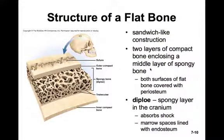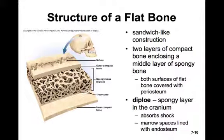Flat bones have a distinctly different, sandwich-like structure — two layers of compact bone enclosing a middle layer of spongy bone. Both surfaces are covered with periosteum of the same structure as on long bones. The spongy layer in the cranium is called the diploe, which acts to absorb shock. Because of this layer, the skull can fracture in the outer compact bone, but the diploe absorbs the impact and leaves the inner compact layer intact.